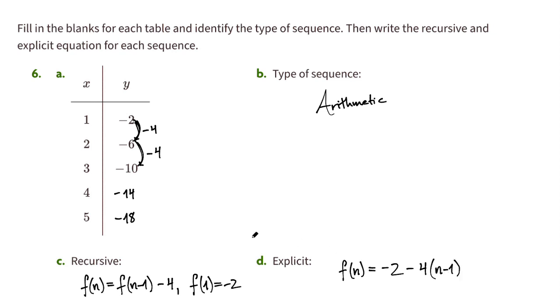Note that I used n here where I used x over here, and I could have just as easily used x. I could have written this as f(x) equals negative 2 minus 4 times (x minus 1), and that's fine as well.